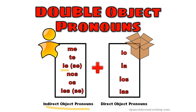But remember, if you're using le or les with any form of direct object pronoun — lo, la, los, or las — you cannot say le lo, le la, le los, or le las. If you have any form of le or les combining with any form of lo, la, los, or las, you substitute the le and les for se.